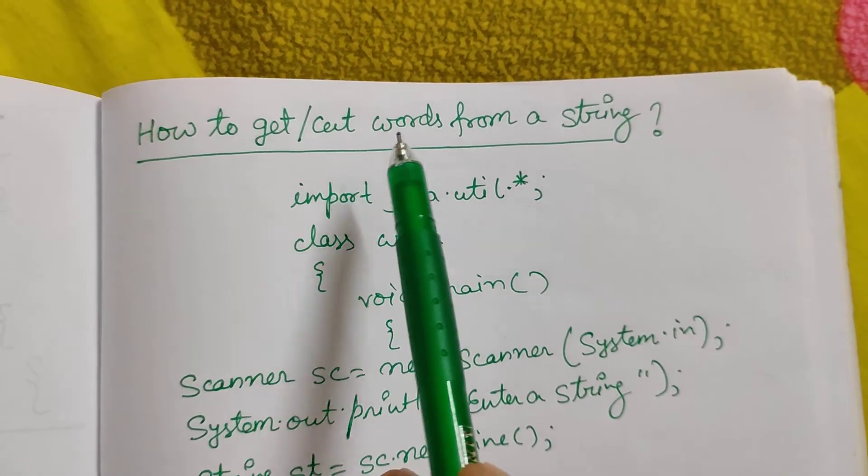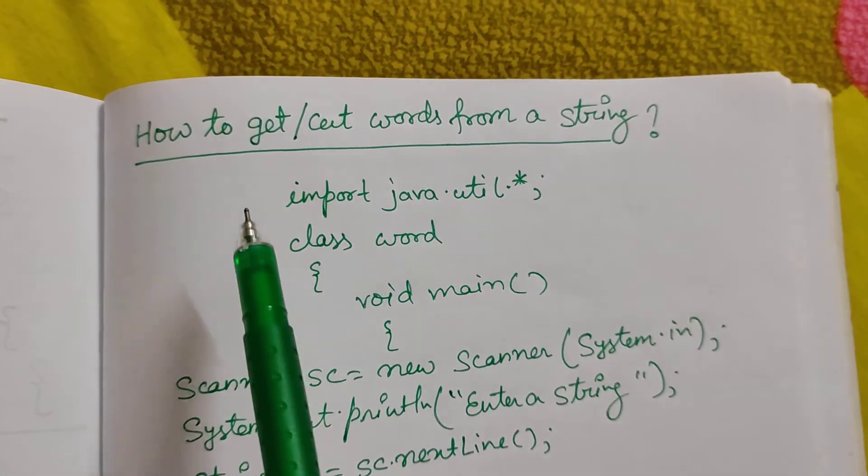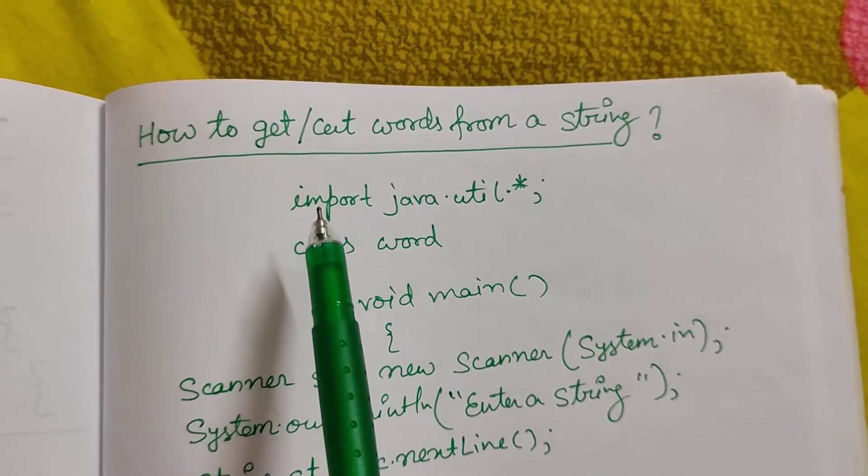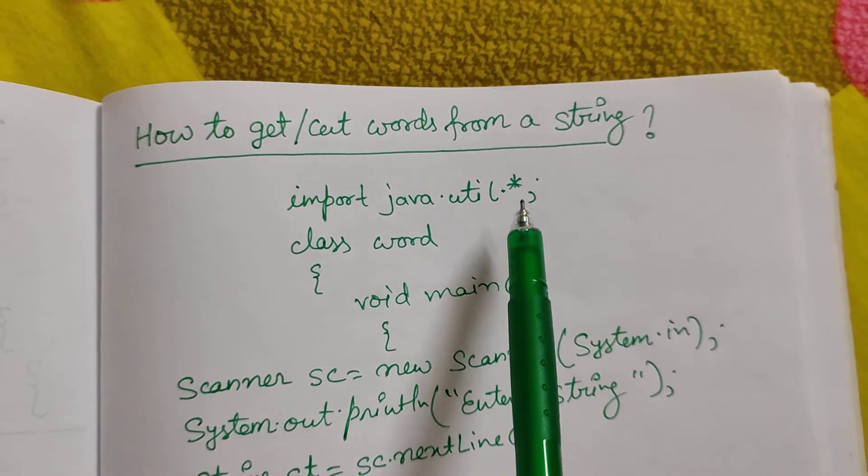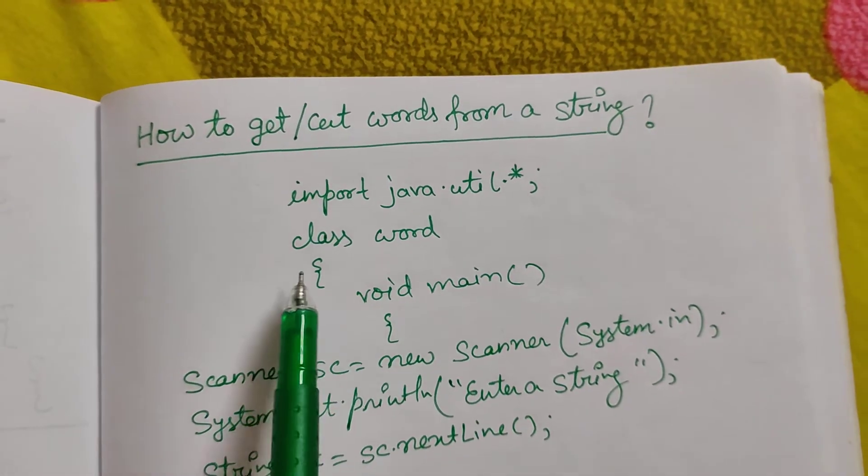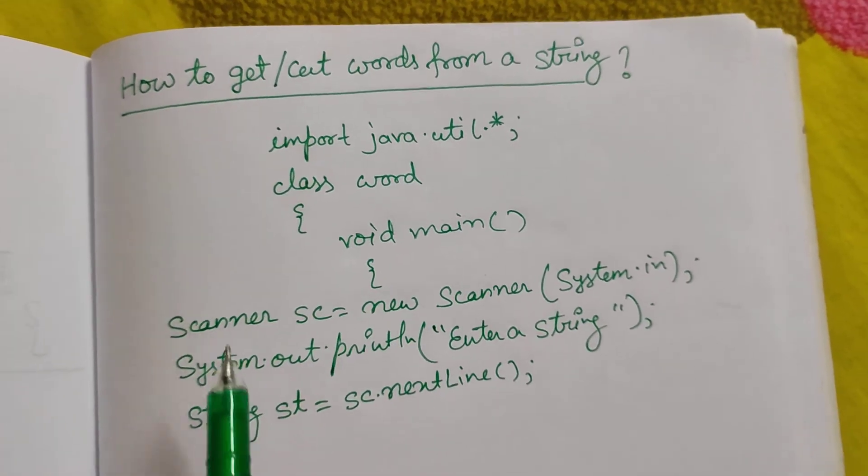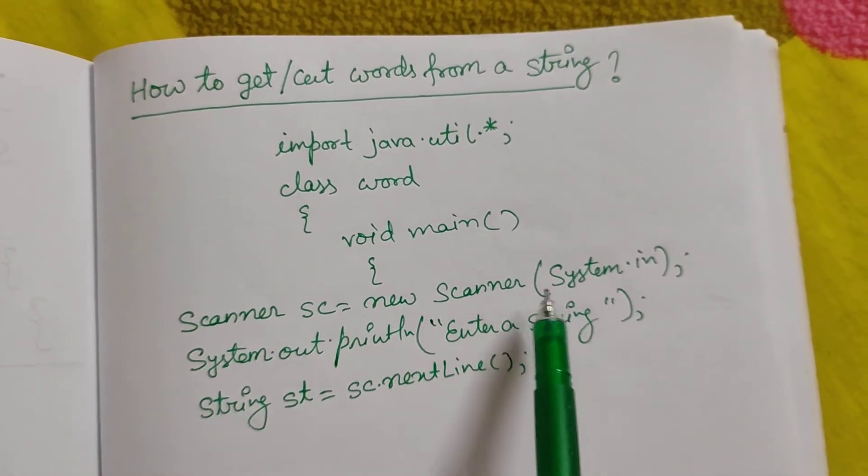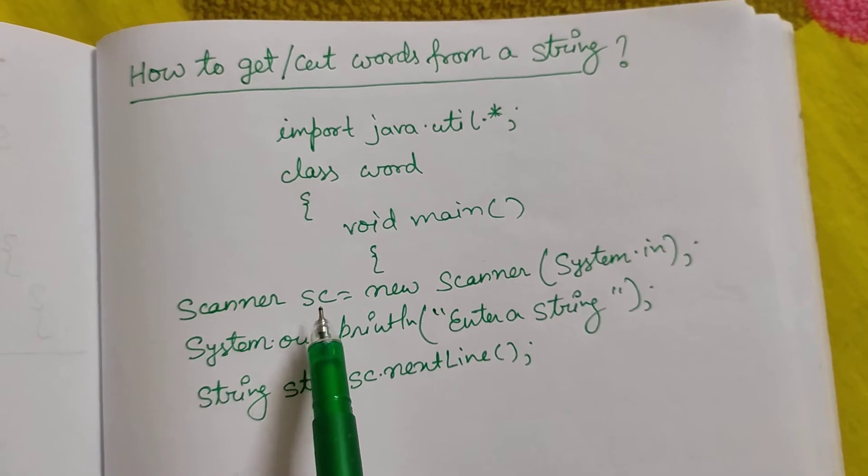We will learn how to get or cut words from a string. First, we have written import java.util.*; for the scanner class, then class word, void main, then Scanner sc = new Scanner(System.in). The scanner object is created.